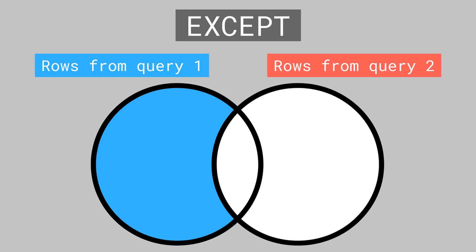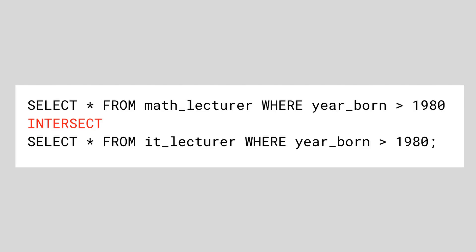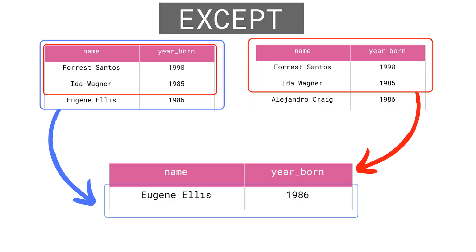The last keyword to discuss is except. Except works by showing those rows that appear in the first table but do not appear in the second table at all. In other words we'll only see rows unique to the first table. Again we only need to change a single keyword to except. We should see lecturers that teach only maths and don't teach IT at the same time. Keep in mind that some databases use the keyword minus instead of except, and there are also databases that accept either of the two.